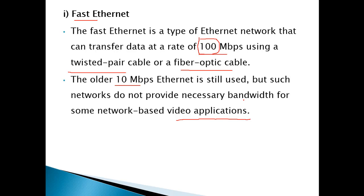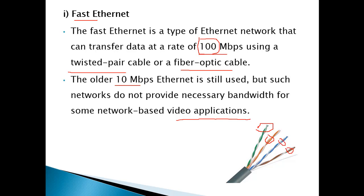Here is a sample image of a twisted pair cable. You can see the pairs: this is one pair, this is the second pair, this is the next pair, and this is the fourth pair. So twisted pair cable has four pairs and eight wires in total. In upcoming lectures, we will also learn how to make twisted pair cables.